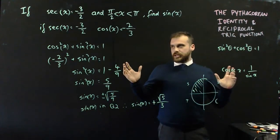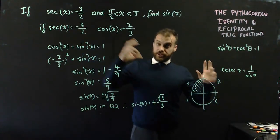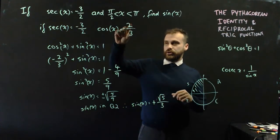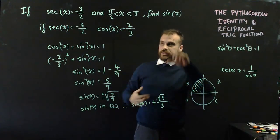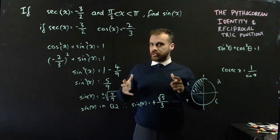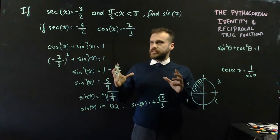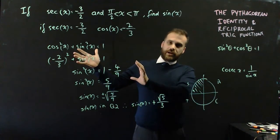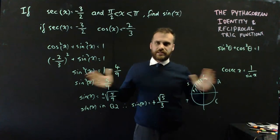Two examples there. Make sure that you understand that reciprocal is exactly what it sounds like. So if you know sec, you know cos by flipping it. If you know cosec, you know sine by flipping it. And then understand that if you know cos and you want to know sine, then you're going to have to use the Pythagorean identity at some point.